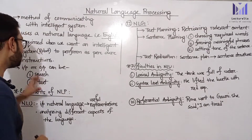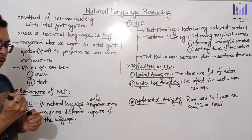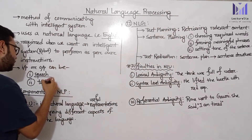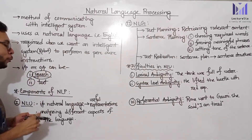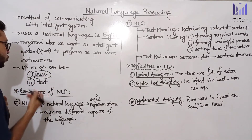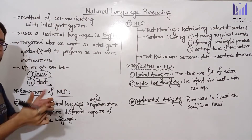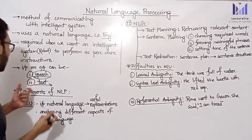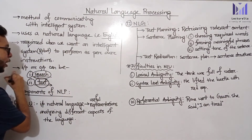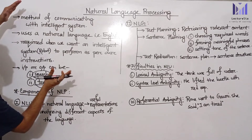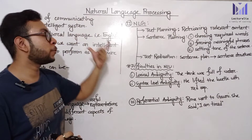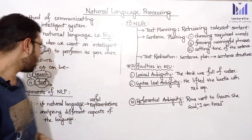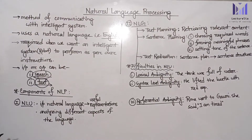NLP works on a specific method: speech and output data, like text. When we write a text input, the output is also text. This is the basic method of natural language processing. The concept is related to real-life applications. Now let's look at the components of NLP.